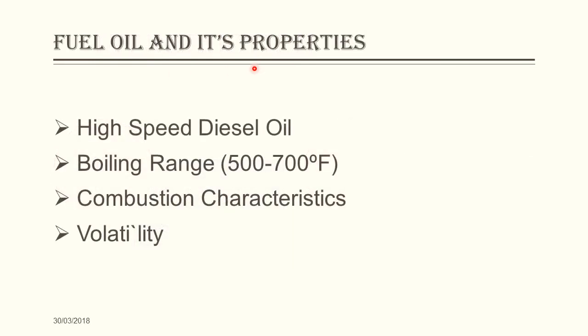Regarding fuel oil and its properties: high speed diesel oil is used as fuel in the diesel locomotive. It is a mixture of hydrocarbons comprising paraffins, olefins, naphthenes and aromatics, having a boiling range from 500 to 700 degrees Fahrenheit. Additives may also be used to improve the performance and ignition quality of the fuel. The properties on which diesel fuel depends include combustion characteristics like cetane number, diesel index, volatility, and other factors like stability, viscosity, specific gravity, ash content and carbon residue.